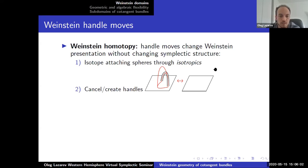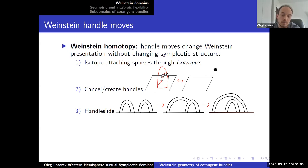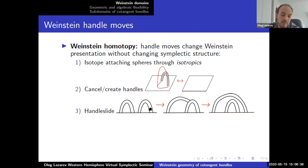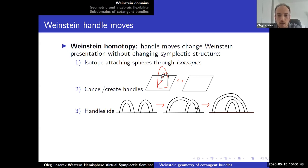A third thing you can do is handle slide. Suppose you have two handles of the same index; you can isotope the attaching sphere for the left handle so that it goes over the second handle, engulfs it, and then push the attaching sphere back down to the same contact manifold. This is a procedure where the number of handles doesn't change, but the attaching spheres change quite drastically. These are the main moves — they are the same as smooth handle moves except the attaching spheres must be isotropic.